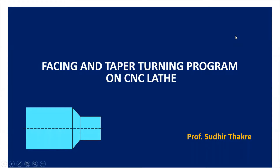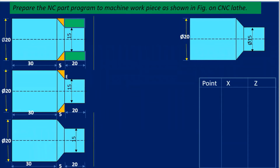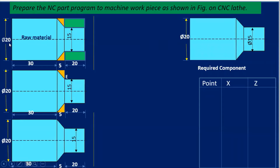Hello friends, today we are going to see how to write the facing and taper turning program on a CNC lathe. We need to prepare the NC part program to machine the work piece as shown in the figure. The raw material size given is length 55 mm and diameter 20 mm. The operations to be performed are facing, plain turning, taper turning, and again plain turning.